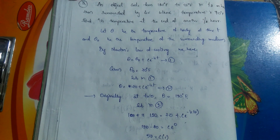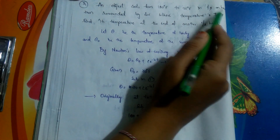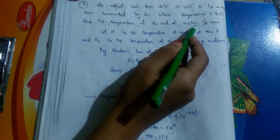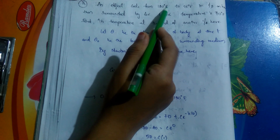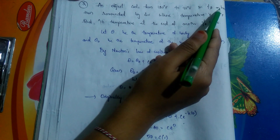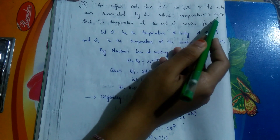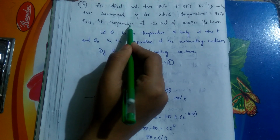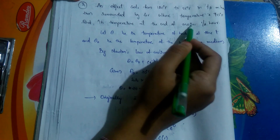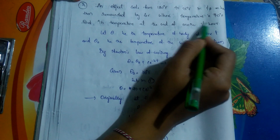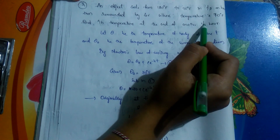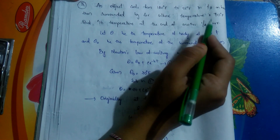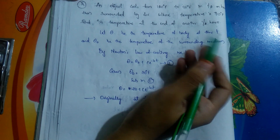Next problem: an object cools from 120°F to 95°F in half an hour, surrounded by air at 70°F. Find its temperature at the end of another half an hour. The object cools in the first 30 minutes; another half an hour means 30 + 30 = 60 minutes total. So at T = 60 minutes, we need to find the temperature.